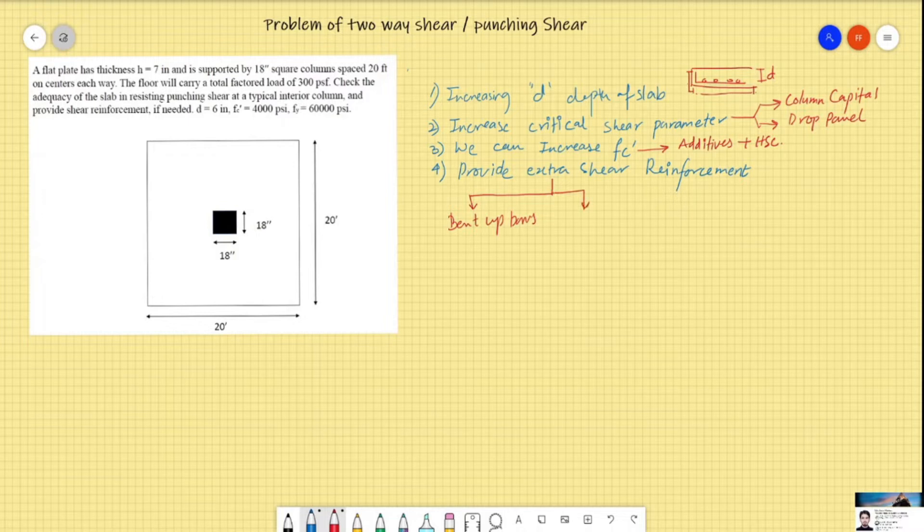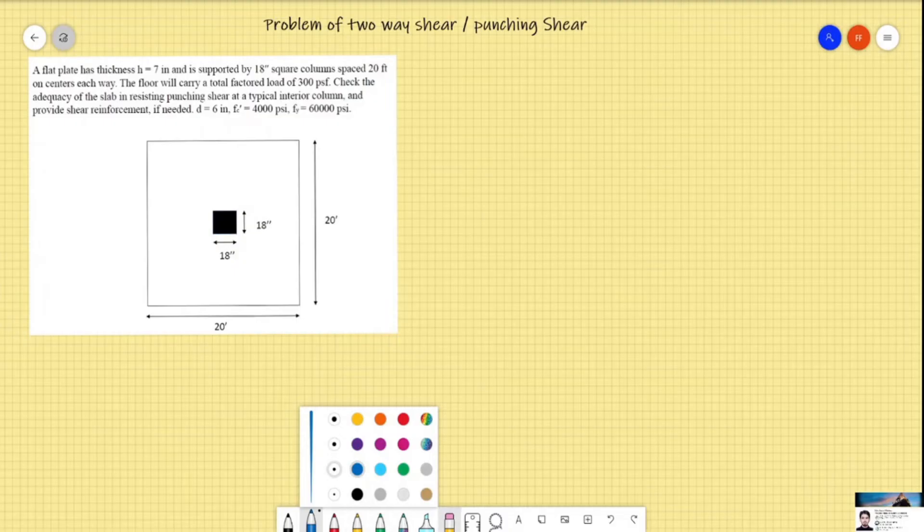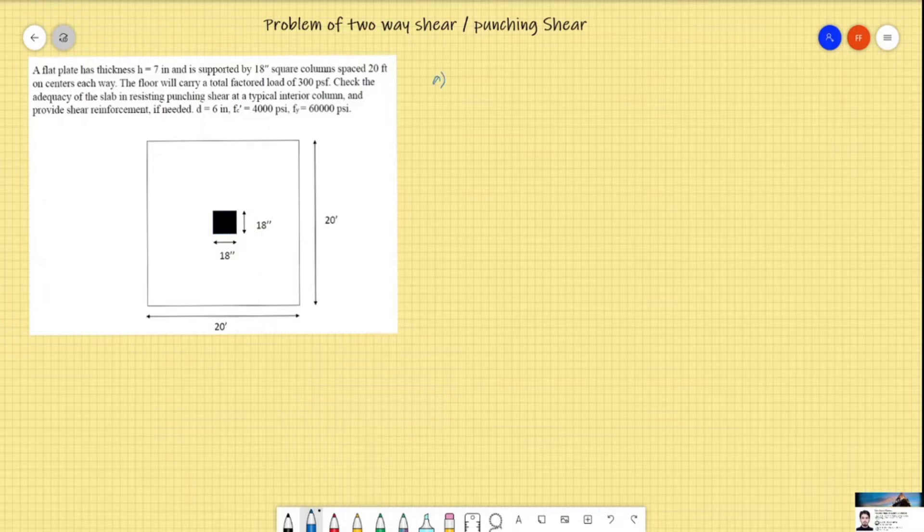And the second one is integral beams, in which we use reinforcement bars and embedded beams within the slabs. These are called integral beams. Number three is shear studs, a metal strip with steel nails welded to them. Number four is shear steel section or a shear head, in which we use standard steel sections embedded in the slab.